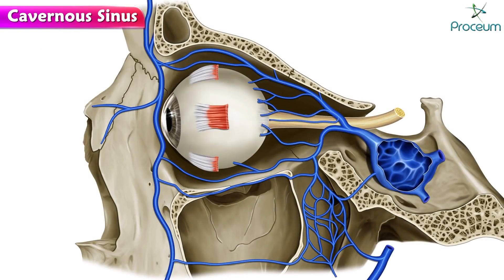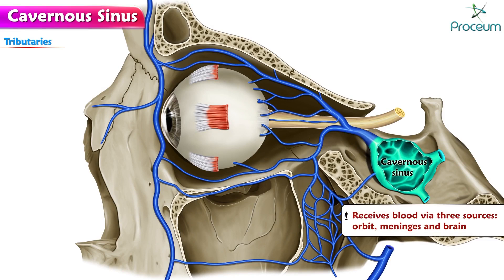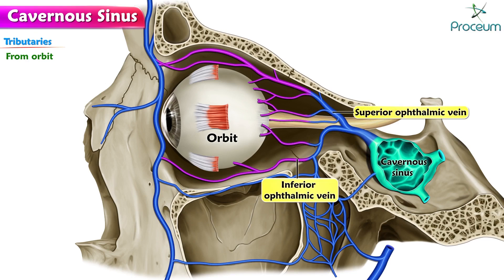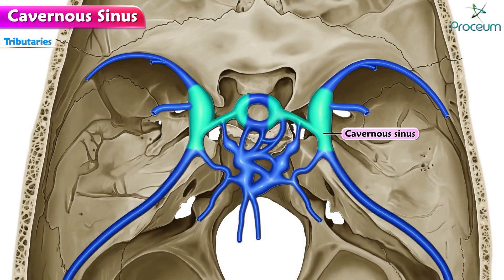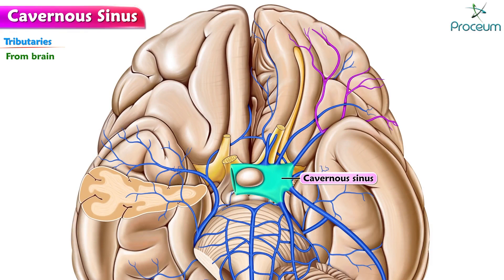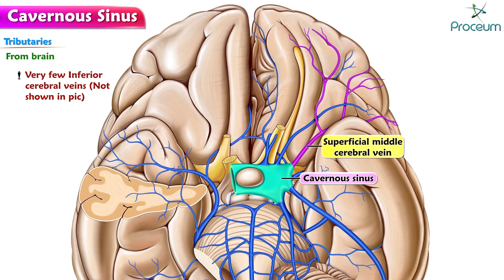Now let's cover the tributaries of the cavernous sinus. The cavernous sinus receives blood via three sources: the orbit, the meninges, and the brain. From the orbit, the tributaries are the superior ophthalmic vein, the inferior ophthalmic vein, and sometimes the central vein of the retina. The tributaries from the meninges are the sphenoparietal sinus and anterior, or frontal, trunk of the middle meningeal vein. The tributaries from the brain are by means of the superficial middle cerebral vein and very few inferior cerebral veins.